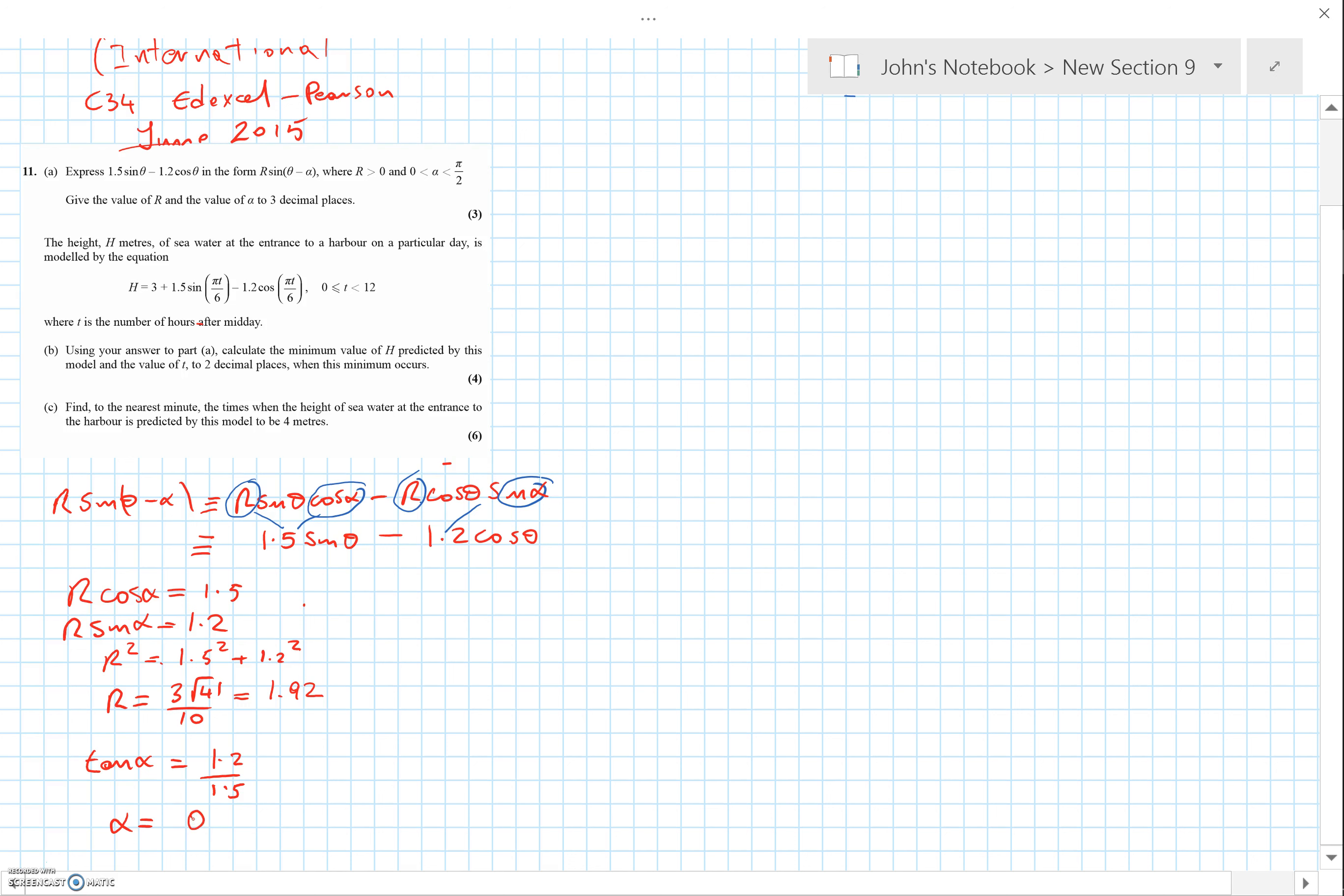That quickly gets us to α equals 0.675 to three significant figures. I've stored the exact number on the calculator, which is 0.674747 and so on, so that I may use it later. But it's okay to write the answer here to three decimal places as asked.